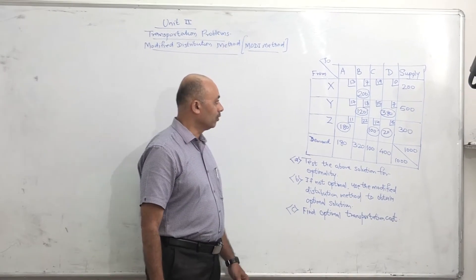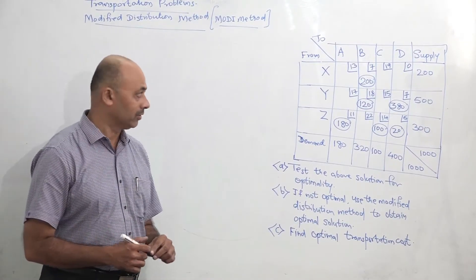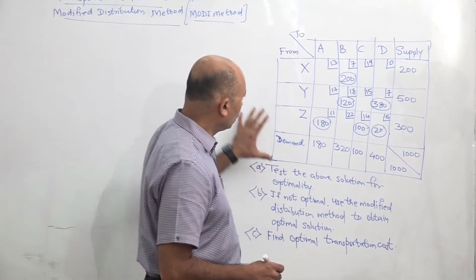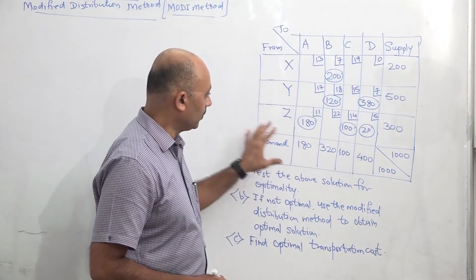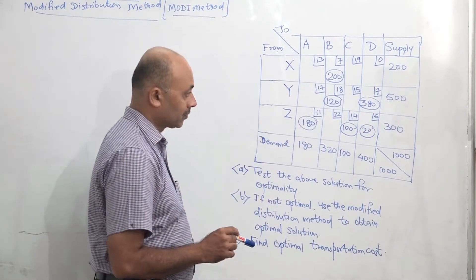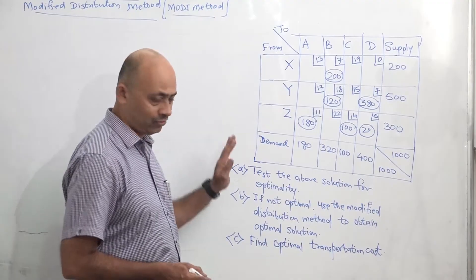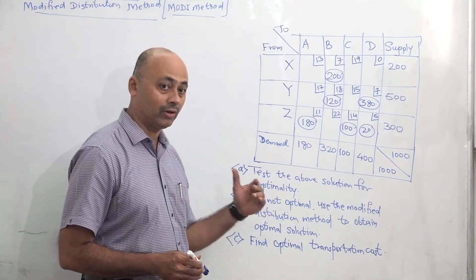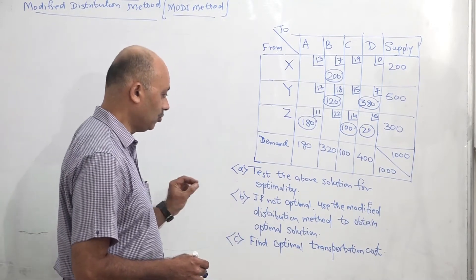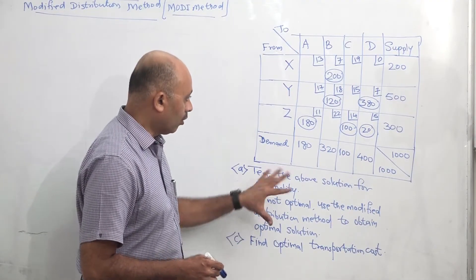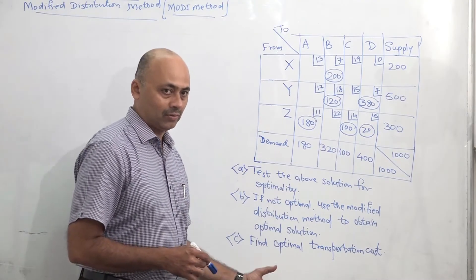In this video, we are going to see how to solve a given problem by the Modified Distribution Method. This question is given to us where the initial feasible solution (IFS) with allocations is already given. So we don't have to find the IFS. What we have to do is test this IFS for optimality — whether it is an optimal solution or not. And if it is not optimal, then we have to use the Modified Distribution Method, also called the MODI method, to change this solution and obtain the optimal solution.